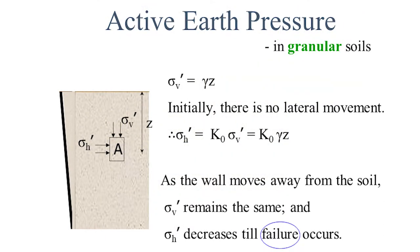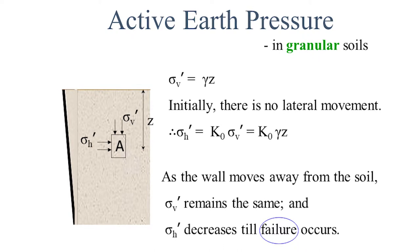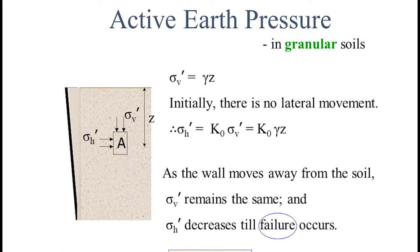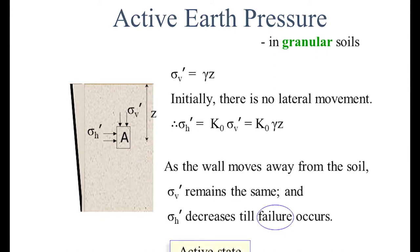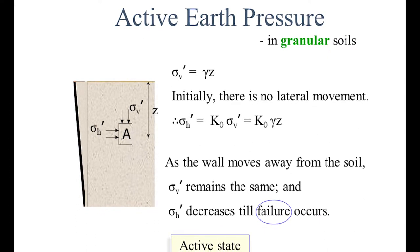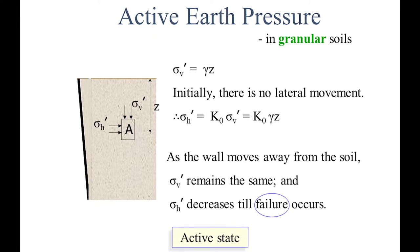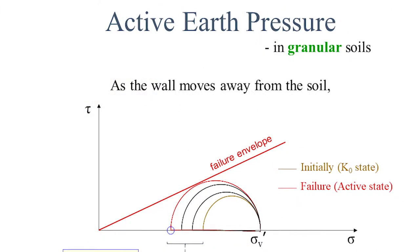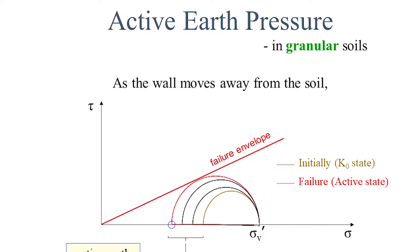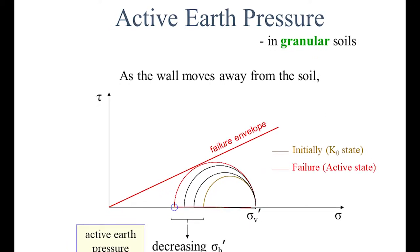Quantifying the active earth pressure in granular soils: sigma V dash is equal to gamma times Z. Initially, there is no lateral movement, so sigma H equals K0 times sigma V, which equals K0 times gamma Z. As the wall moves away from the soil, sigma V remains the same because of the depth, and sigma H decreases because the wall is not supporting the soil, until failure occurs. In the active state, sigma V is constant and sigma H reduces, moving towards the shear failure line.